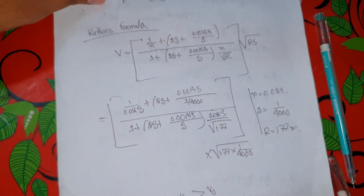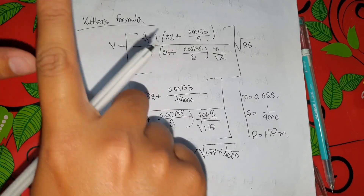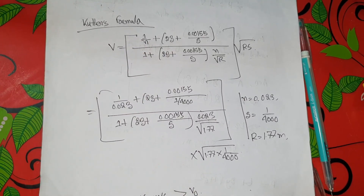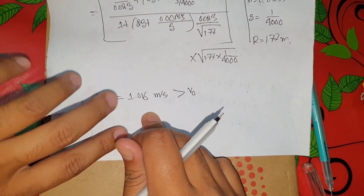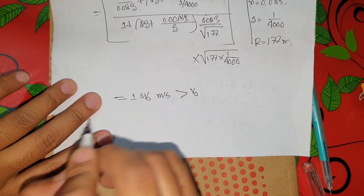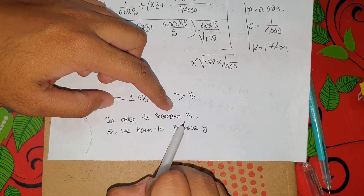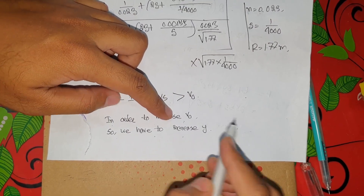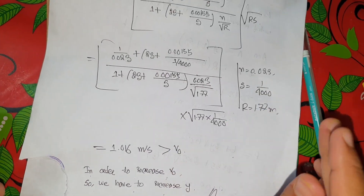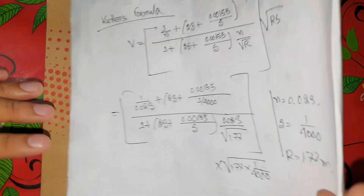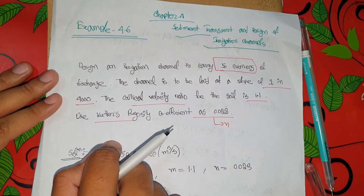Since the computed velocity does not match, we have to increase V naught. We need to increase Y and repeat the iteration to find the correct design values.